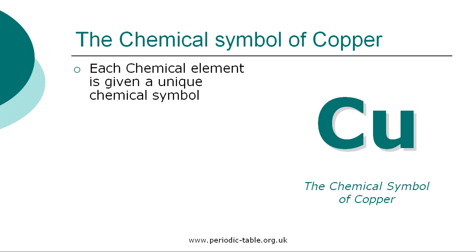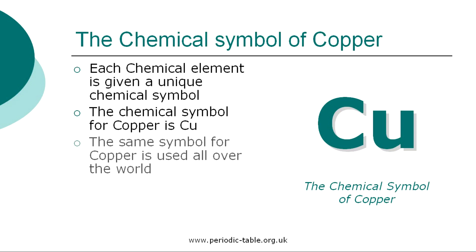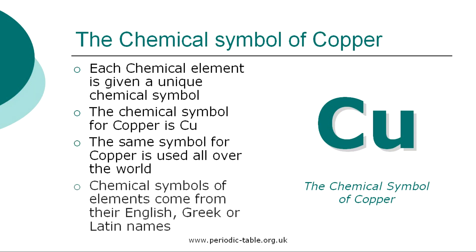Each chemical element is given a unique chemical symbol, which is used all over the world. The chemical symbol for copper is Cu. The chemical symbols of elements come from their English, Greek, or Latin names. The first letter of a symbol is always a capital letter, and if there are any subsequent letters, they are expressed in lowercase.